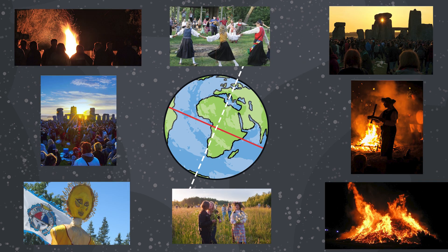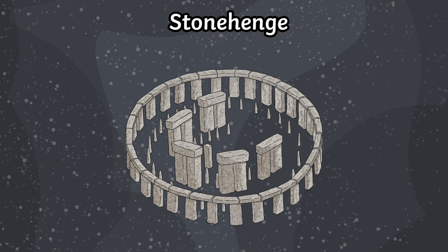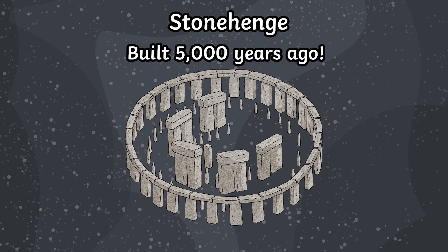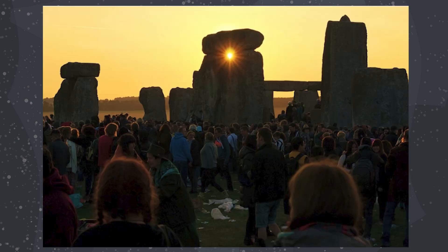The summer solstice is a big event for many people around the world and has been for thousands of years. Stonehenge is a famous site consisting of a circle of stones, built around 5,000 years ago. Every year on the summer solstice, the sun perfectly aligns itself with the stones that make up Stonehenge, and it is a site which many travel to from all across the globe.